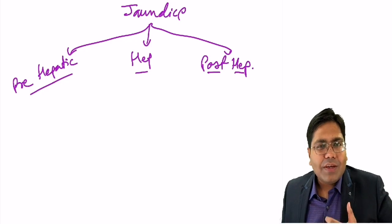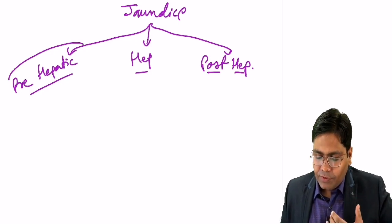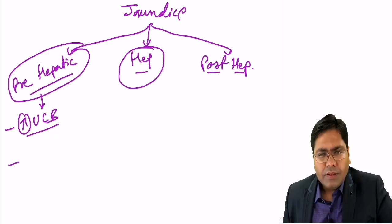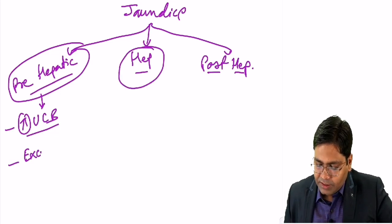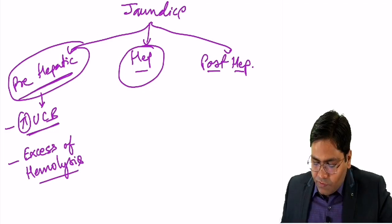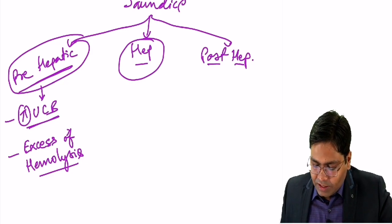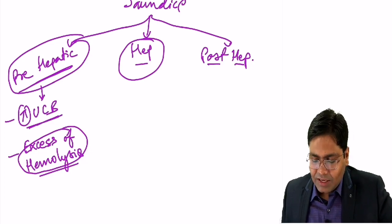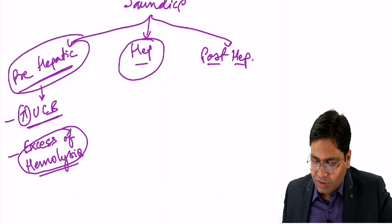When the bilirubin formed before reaching the liver is raised, that means when there is a rise in unconjugated bilirubin, that leads to pre-hepatic jaundice. This is because of excess hemolysis, that is excess breakdown of RBCs. Whenever there is excess hemolysis, the jaundice that appears will have excess unconjugated bilirubin.